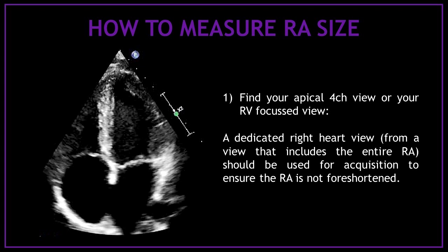I'm going to show you how to measure the right atrial size step by step. When you measure the right atrial area, you automatically obtain the right atrium volume. The first step is finding your apical four-chamber view or your right ventricular focus view. A dedicated right heart view that includes the entire right atrium should be used to ensure the right atrium is not foreshortened.